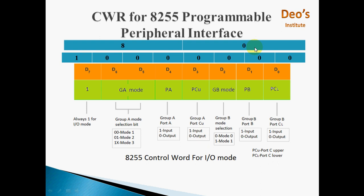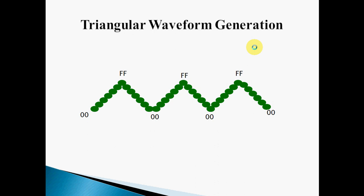Now we will start with the program. This is our triangular waveform. To form a triangular waveform, we have to send values from 00 to FF. We will send value 00, then increment it by 1, then send it to DAC again, increment again, and so on up to FF. Once the value reaches FF, we will decrement by 1 each time and send it to DAC. When it reaches 0 again, we increment once more. So 00 to FF and FF to 00 continuously forms a triangular wave.